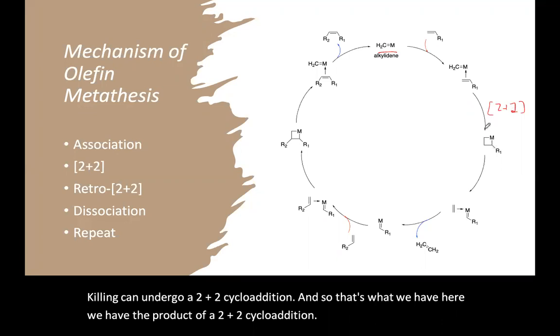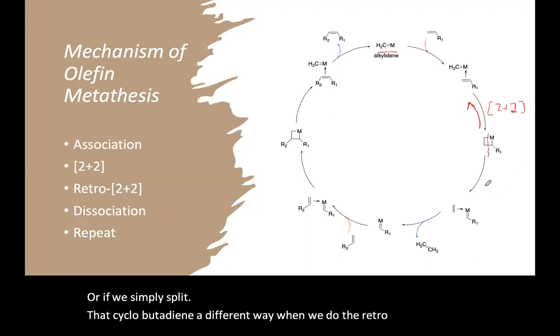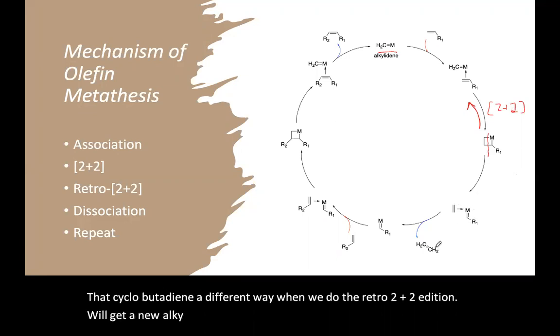And that's also reversible. So it can go back where it came from. Or if we simply split that cyclobutadiene a different way, when we do the retro [2+2] addition, we'll get a new alkene. We'll produce ethene, which can then be lost.